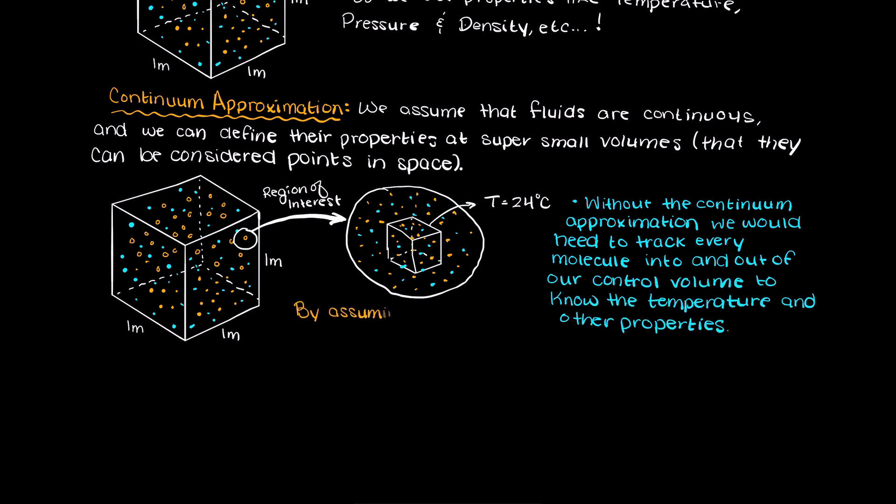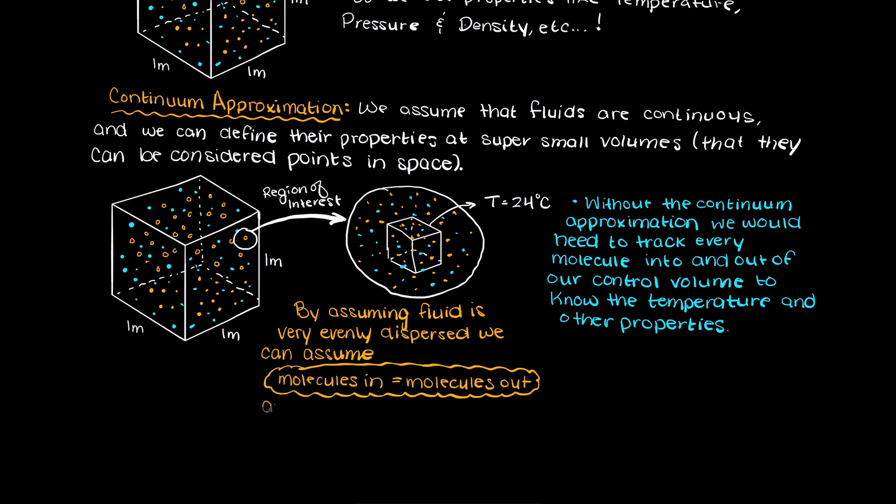However, by approximating that the fluid is continuous, we can assume molecules are properly dispersed throughout our control volume and it is at steady state like our system. Therefore, properties like density will be the same in our small control volume as in a similar control volume on the other side of the room at the same height.